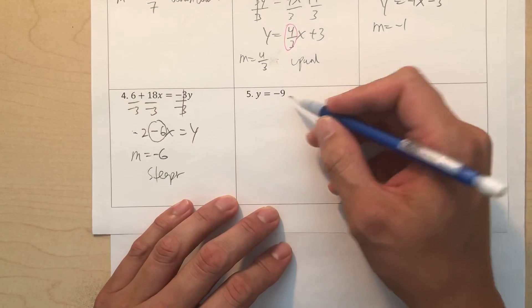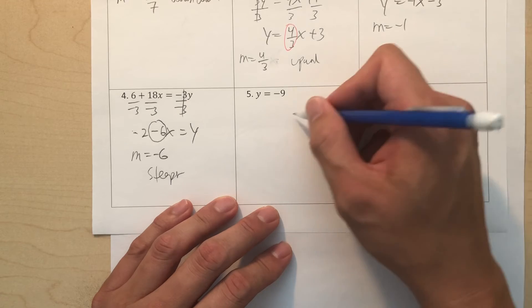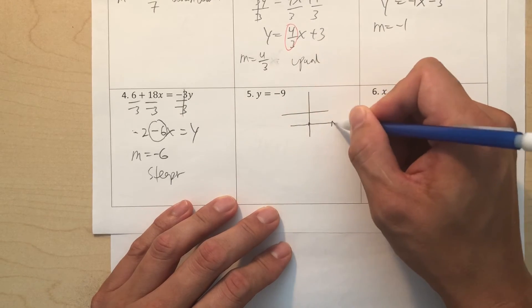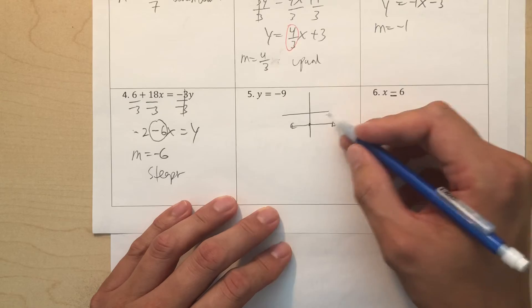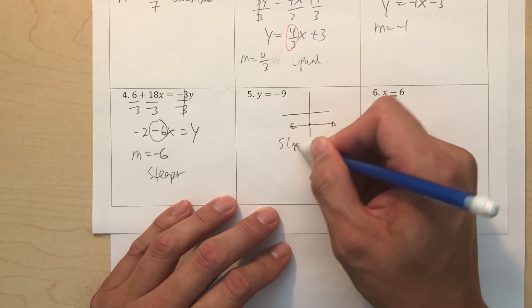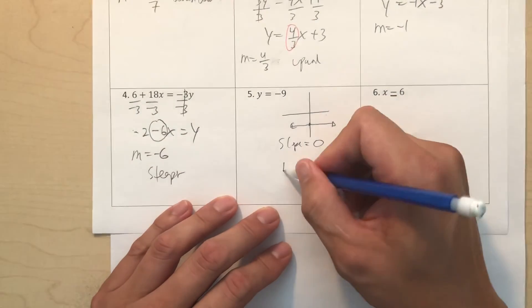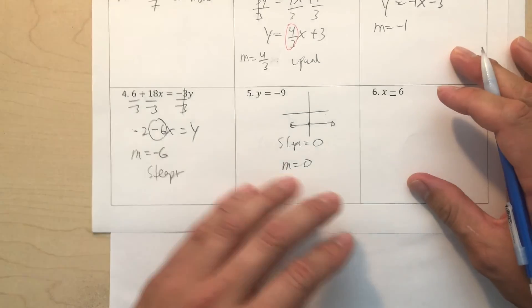This one here is a horizontal graph. This is negative 9. So therefore, since it's a horizontal graph, my slope is 0. M is equal to 0, same thing. Horizontal graph.